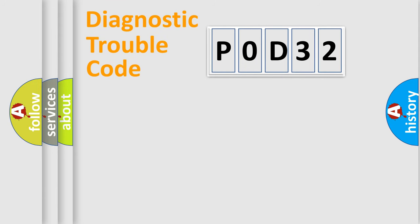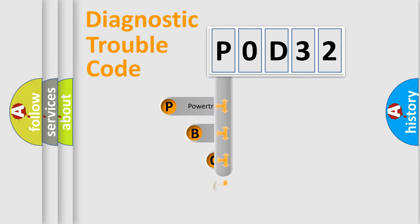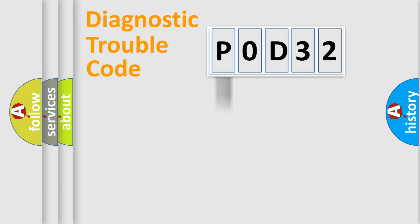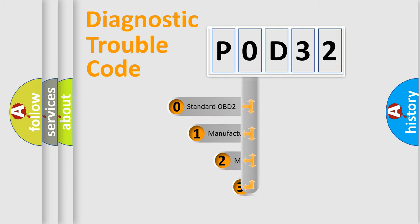Let's look at the history of diagnostic fault code composition according to the OBD2 protocol, which is unified for all automakers since 2000. We divide the electric system of the automobile into four basic units: Powertrain, Body, Chassis, and Network. This distribution is defined in the first character of the code.